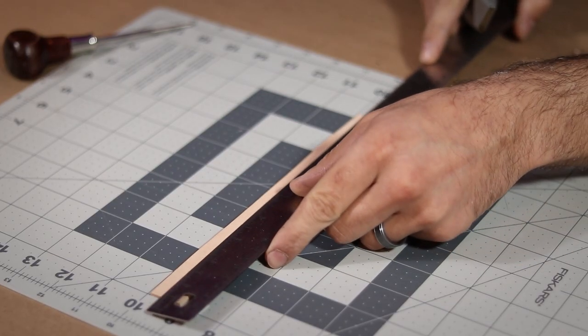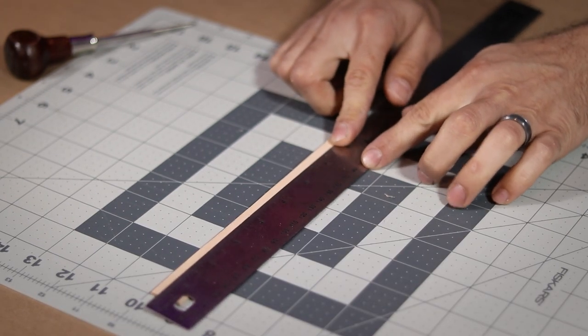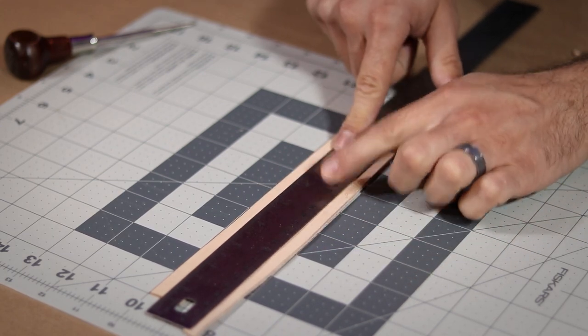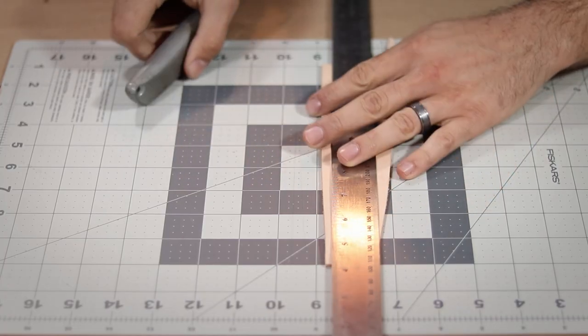Next, lay a straight edge along those marks to use as a guide. And if your ruler rocks around, you may need to put another piece of leather under the other edge just to even it out. Using a sharp razor, run it along your guide, making two clean straight cuts.